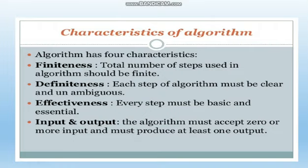The last characteristic is input and output. The algorithm must accept zero or more inputs and must produce at least one output. The algorithm we are writing must have input, it should process the input, and then provide the output. The three most important things necessary in an algorithm are input, process, and output. In the process, logics will be used. These are the characteristics we must keep in mind while writing an algorithm.